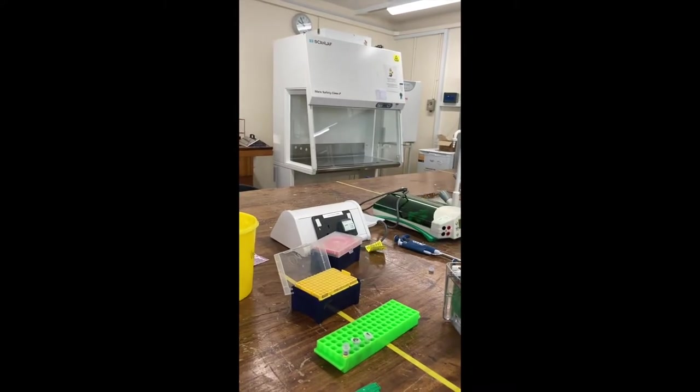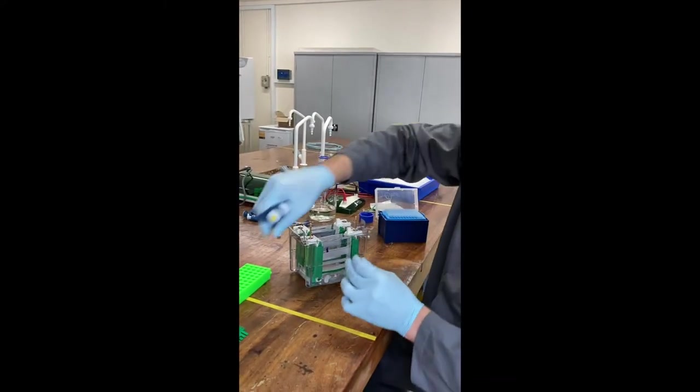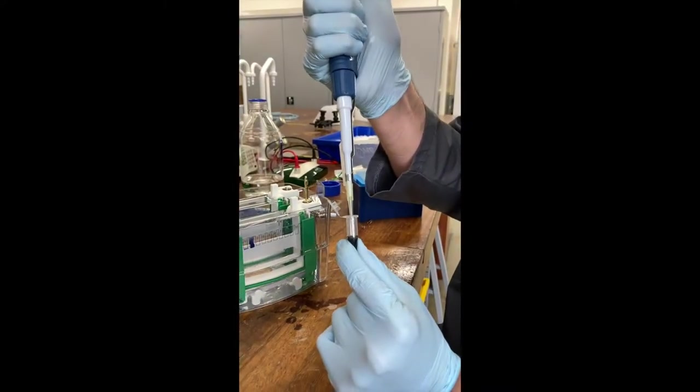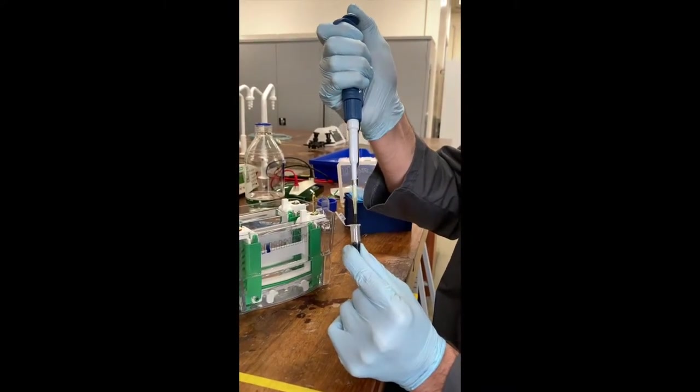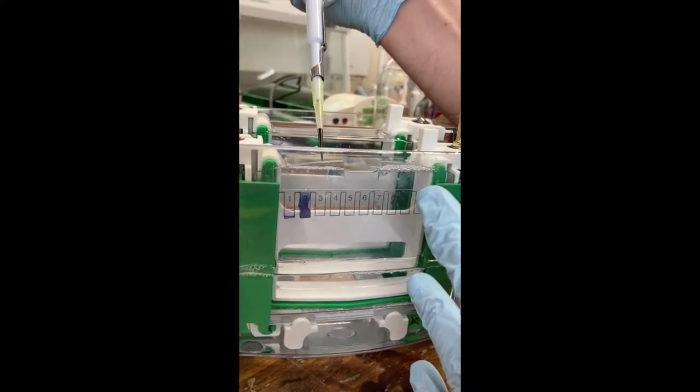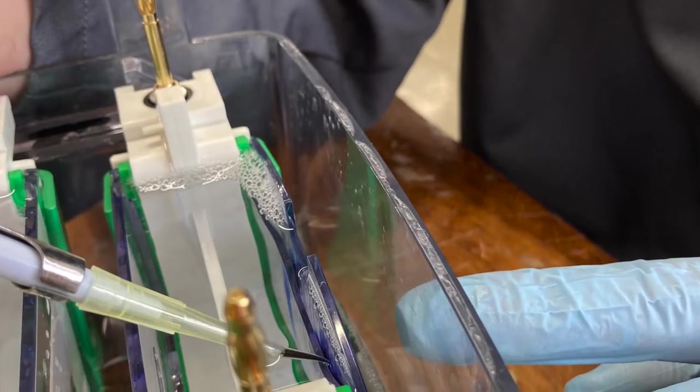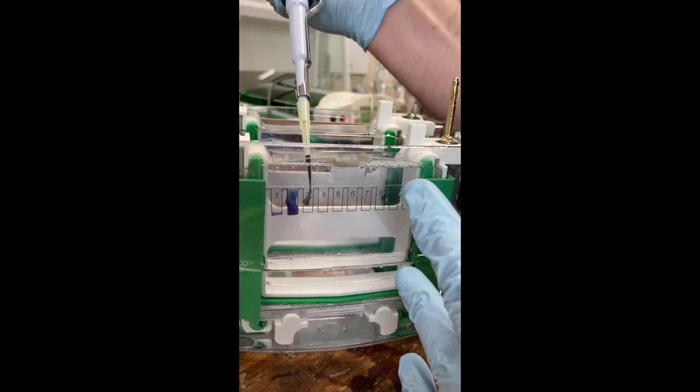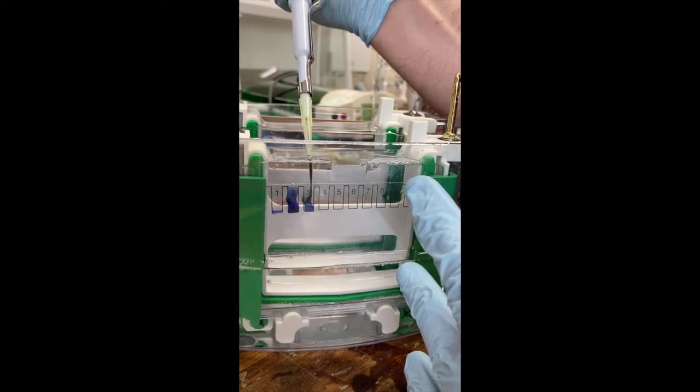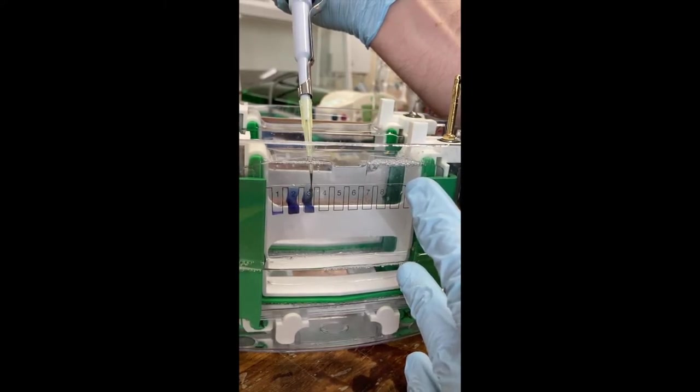I repeat that process for my second sample. So this was the one that I centrifuged. Again, first stop, into my sample, pipette up. This time I'm going to go to the third well, angling it towards the front plate, down slowly and pipette in. And you can see that that is being drawn down to the bottom of the well.